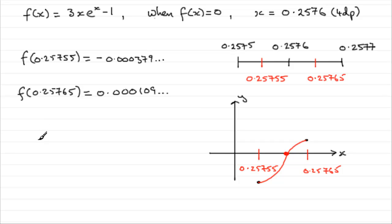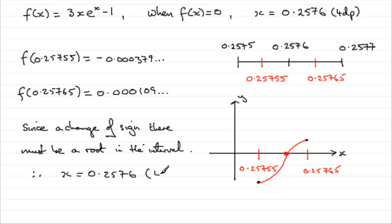And that's basically it. We just need to summarize this at the end. So what I'm going to do is write this, that since there's been a change of sign, there must be a root in the interval. Therefore, x equals 0.2576 to four decimal places. I know I've drawn out the explanation here, but hopefully you've got an appreciation of what's going on.